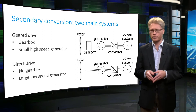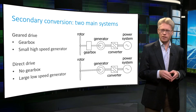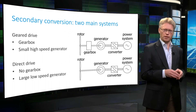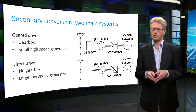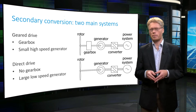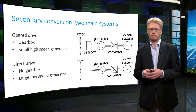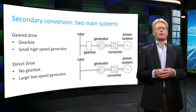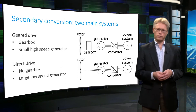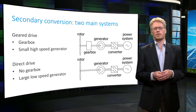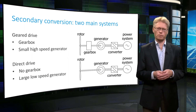Both systems need a power electronic converter for the connection to the power system. The generators operate at a varying speed and therefore generate a varying voltage and a varying frequency. The power system has a constant voltage and a constant frequency. A power electronic converter converts the varying voltage and frequency into a constant voltage and frequency. At full load, the typical efficiencies of gearboxes, generators and power electronic converters are in an order of 97 percent. At partial load, these efficiencies may decrease, especially for gearboxes.